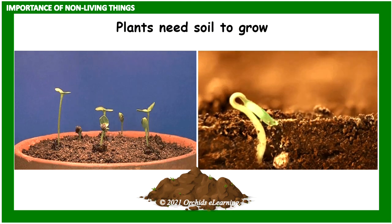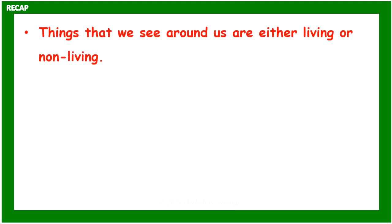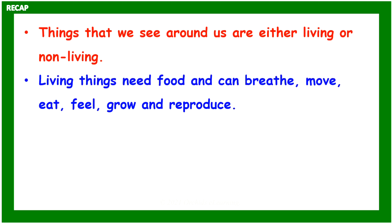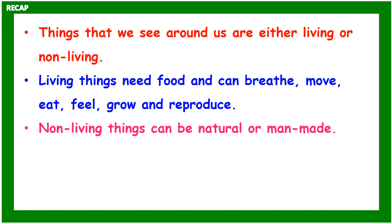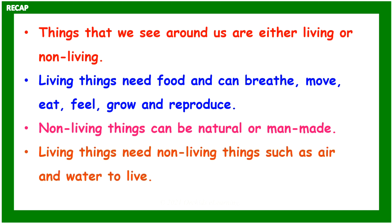Let us recap. Things that we see around us are either living or non-living. Living things need food and can breathe, move, eat, feel, grow, and reproduce. Non-living things can be natural or man-made. Living things need non-living things such as air and water to live and thrive.